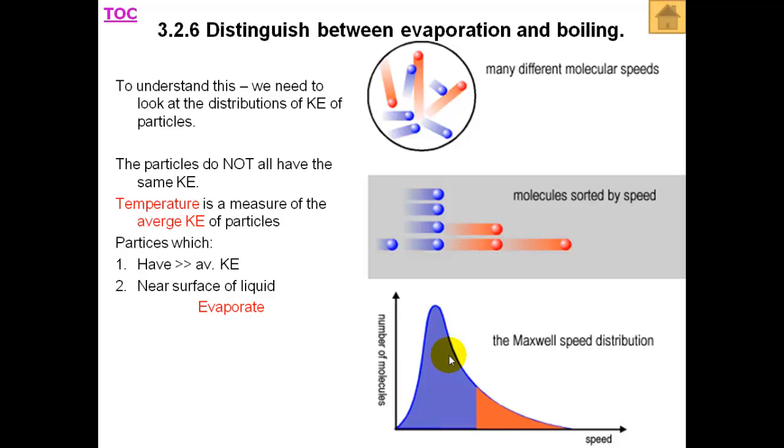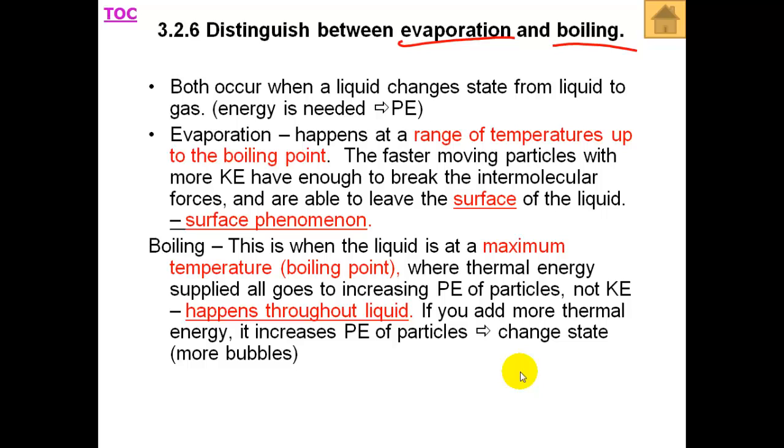When you have boiling, what happens is that all the thermal energy supplied goes to increasing the potential energy of the particles. It reaches a maximum temperature, so there is no temperature rise, and it only changes state. So we have to distinguish between evaporation and boiling.